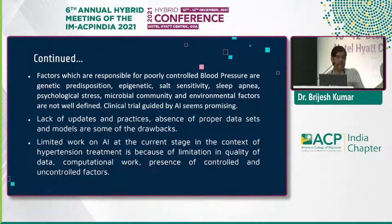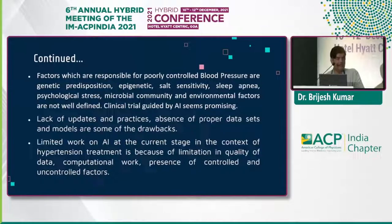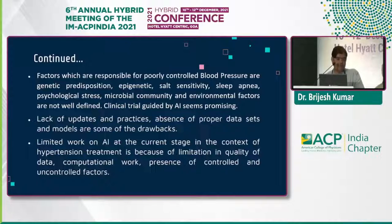Factors essential for poorly controlled blood pressure are genetic predisposition, epigenetics, salt sensitivity, sleep apnea, psychological stress, microbial community, and environmental factors — these are not well defined. In AI-guided control, lack of update of practices, absence of profit, data stress, and model bias are some of the caveats. Limited work on artificial intelligence at the current stage in the context of hypertension treatment is because of limitation of quality of data, computational burden, and presence of controlled and uncontrolled effects.